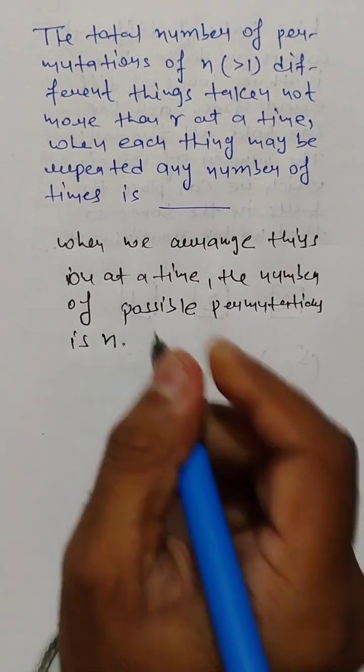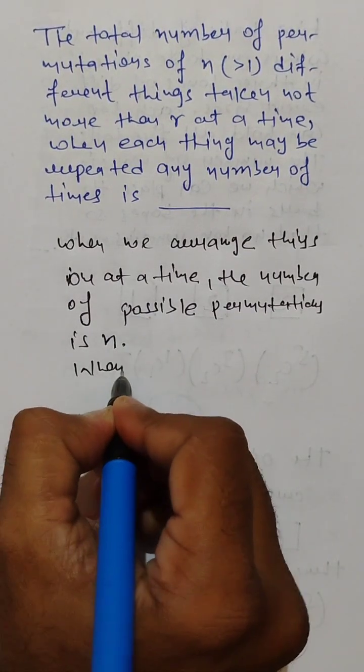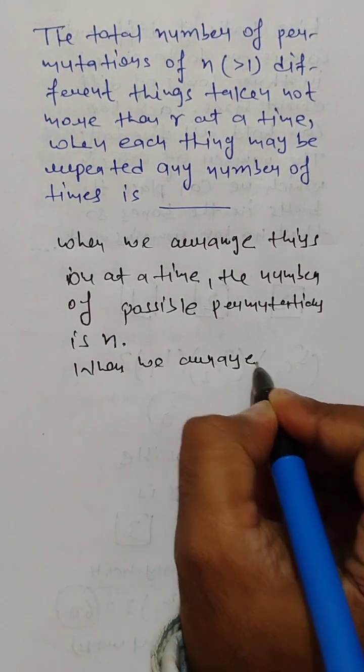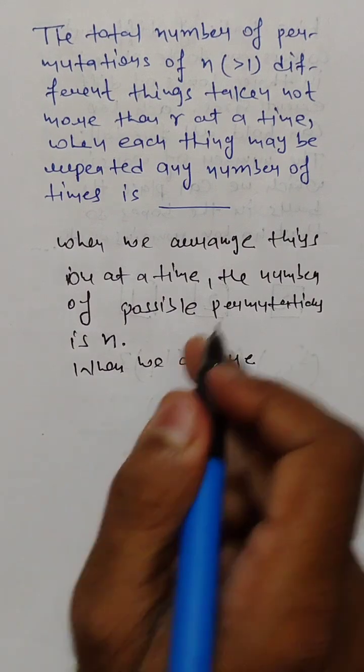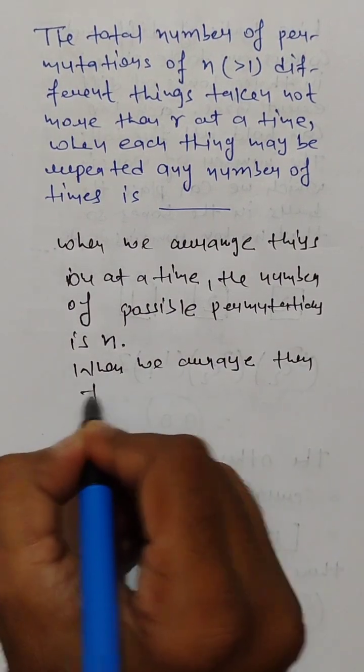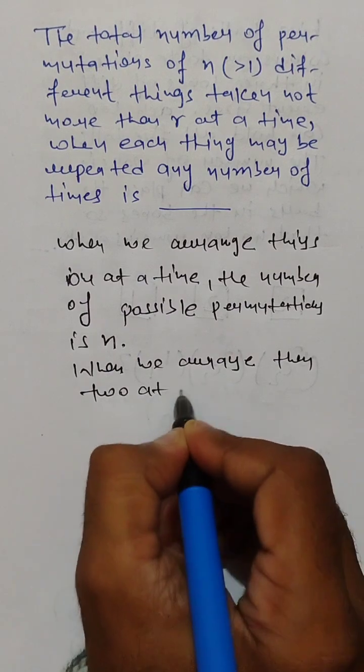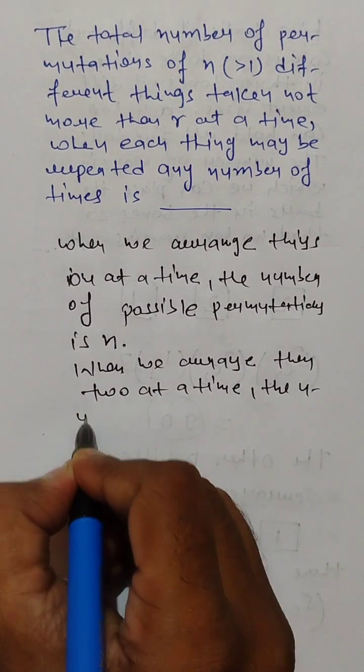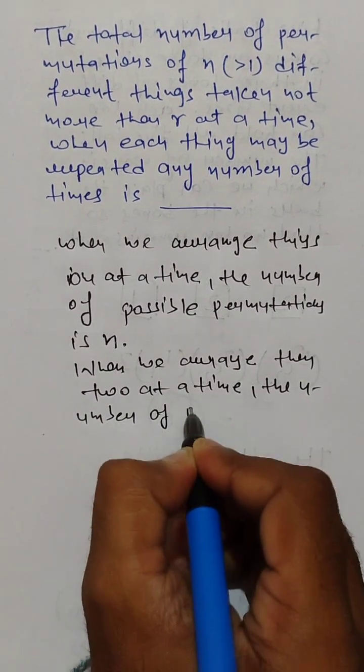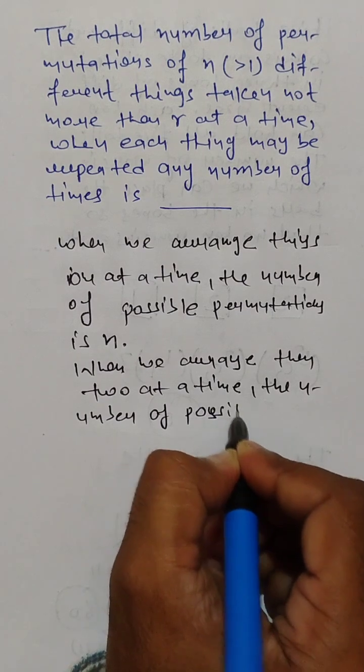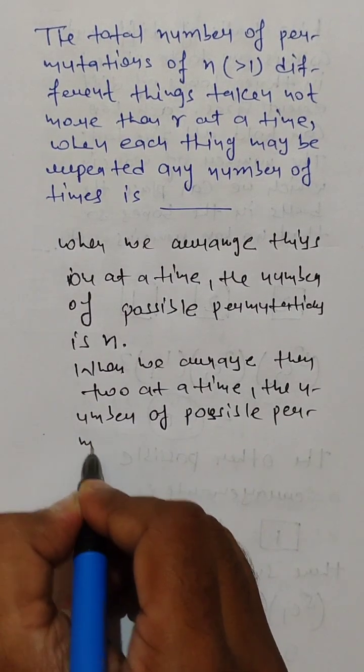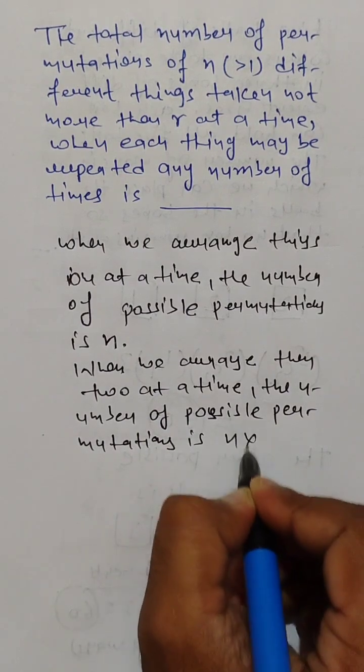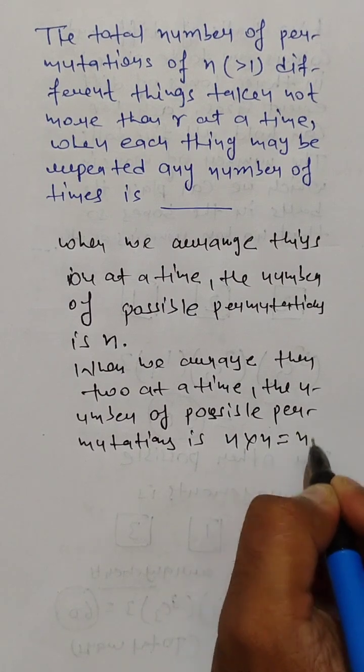n. And when we arrange them two at a time, then the number of possible permutations is n by n, which is equal to n square.